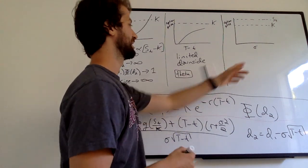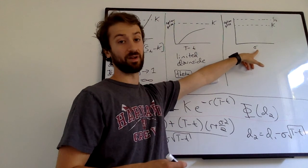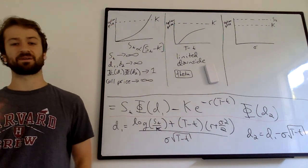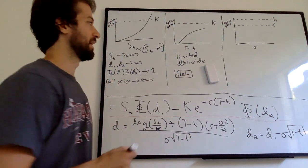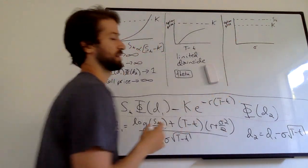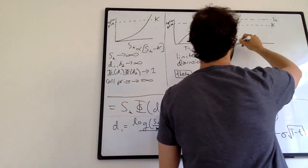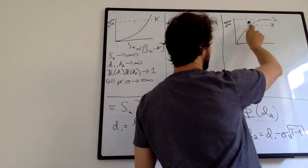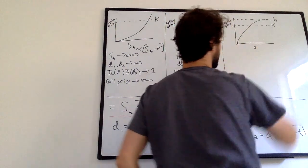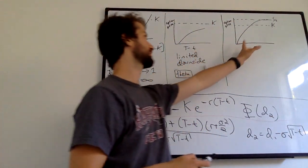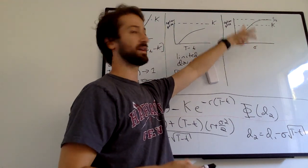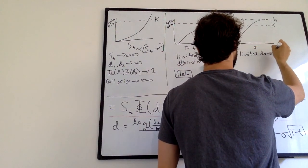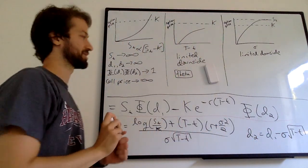The last example is how the option price changes given the underlying volatility. We assume the stock has some underlying volatility sigma — given as an input to the model — and we want to think about how the option price changes as that volatility changes. The option price increases as vol increases. This is analogous to the discussion about time until expiry: because there is limited downside, higher vol means more potential upside.